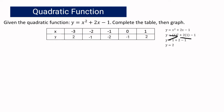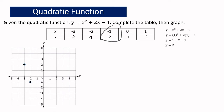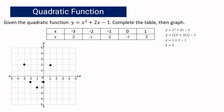Since we completed our table of values, let us plot the points to graph the function. On the Cartesian plane: the first point is negative 3 and positive 2; the second is negative 2 and negative 1; then negative 1 and negative 2; then 0 and negative 1; and finally 1 and 2. Drawing the graph through these points gives us a smooth curve.